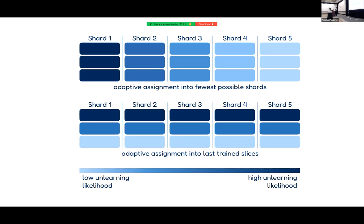If you assign samples at random to slices and shards, you get the method I described previously. But SISA has an adaptive setting where you can additionally sort samples depending on whether they have a low or high unlearning likelihood. If you have individuals you suspect are highly likely to submit an unlearning request, you could either place them into fewer shards or into the later-trained slices — both result in an additional speedup on top of SISA.